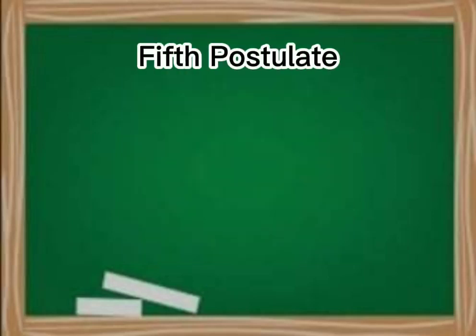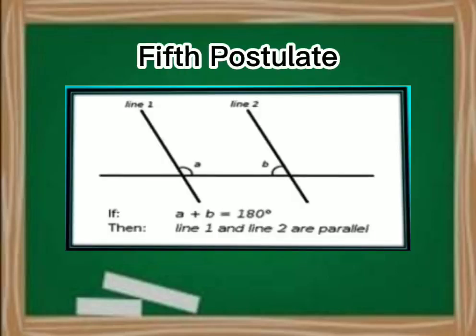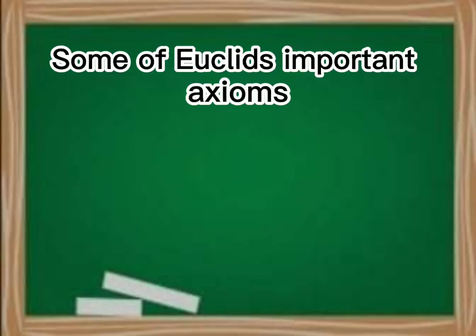Fifth postulate: If a straight line falling on two straight lines makes the interior angles on the same side of it taken together less than two right angles, then the two straight lines, if produced indefinitely, meet on the side which the sum of angles is less than two right angles.